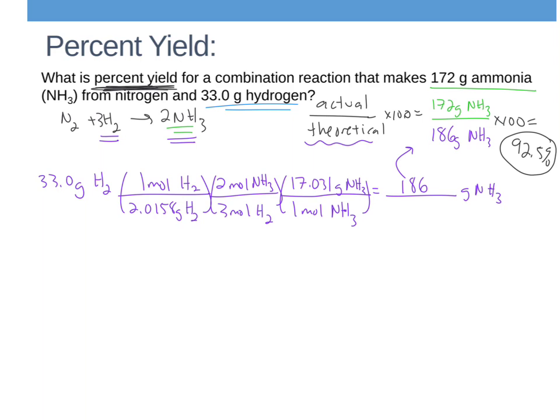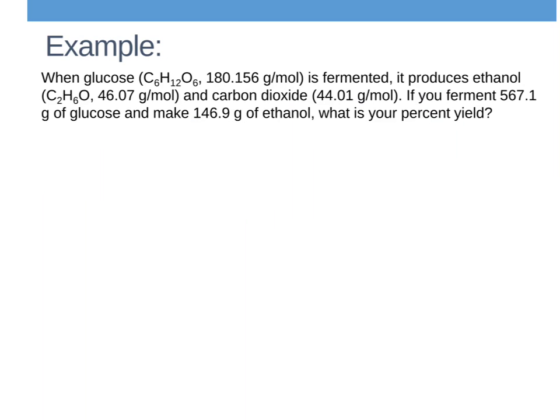So I want you to take a crack at it now, see what you can do with this problem. When glucose, and I'm giving you the formula and the molar masses just to speed things along. So when glucose is fermented, it produces ethanol and carbon dioxide. If you ferment 567.1 grams of glucose and make 146 grams of ethanol, what is your percent yield? So take a crack at this. I gave you an actual yield. You have to figure out the theoretical yield so you can get your percent yield. Write out the equation, do your little balancing and everything, and then go ahead and write out your stoichiometry problem, your conversion factor problem. I'll stop talking for a second. Good place to pause. Good luck.